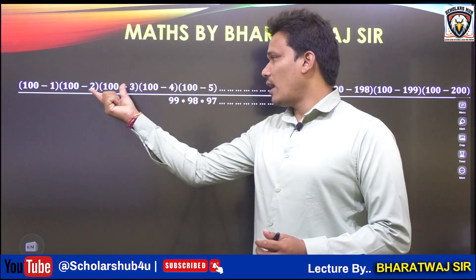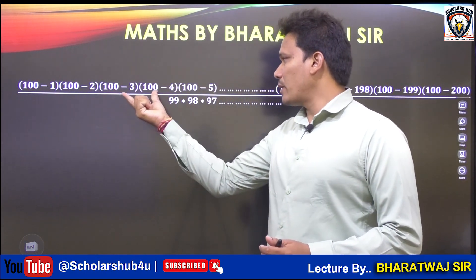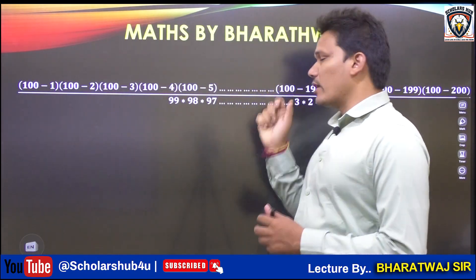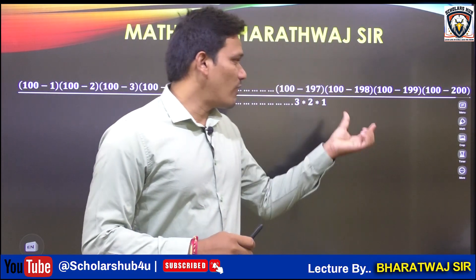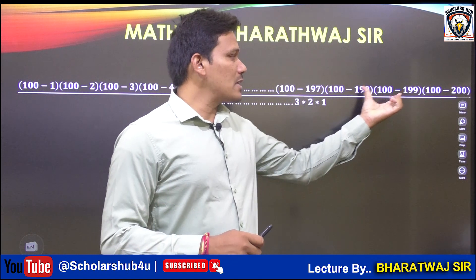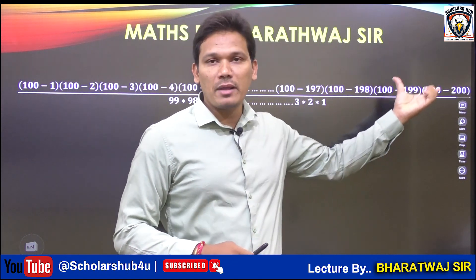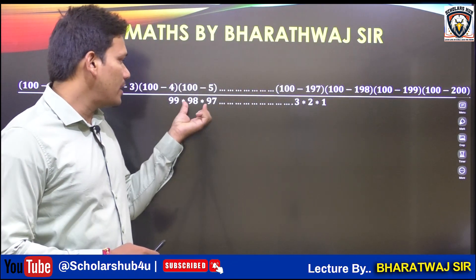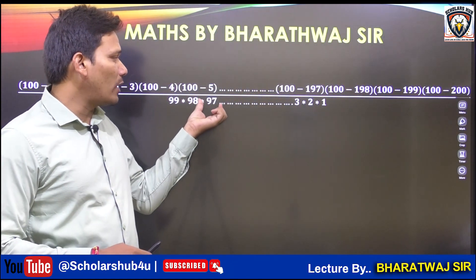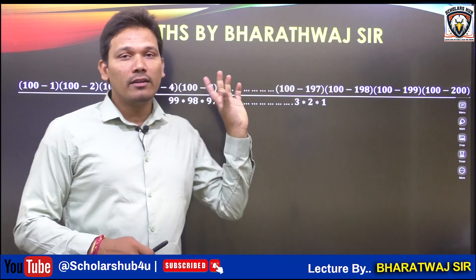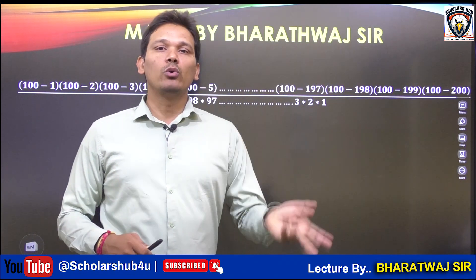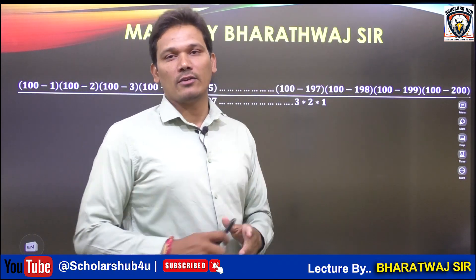The question is: (100 minus 1), (100 minus 2), (100 minus 3), and so on, up to (100 minus 198), (100 minus 190), then (100 minus 200) — all divided by 99 into 98 into 97, and so on, 3 into 2 into 1.